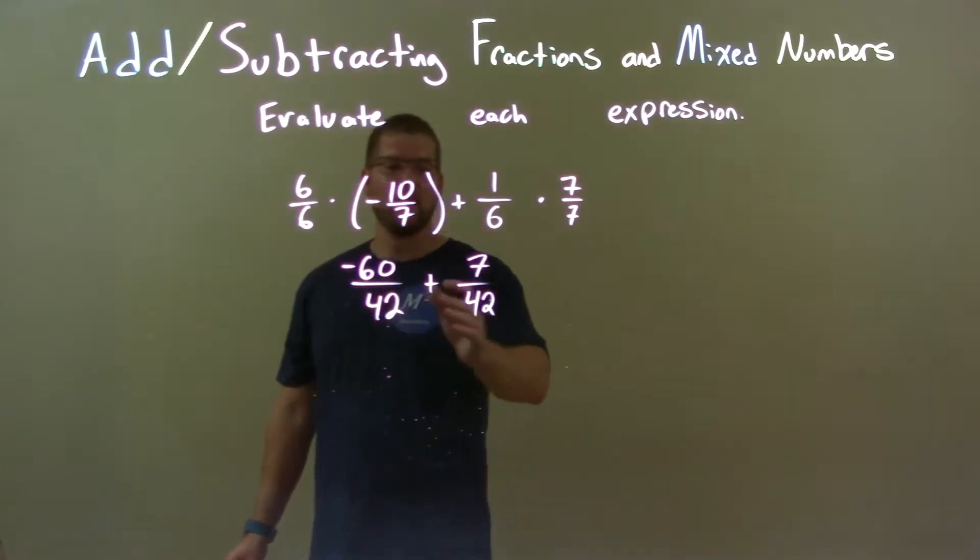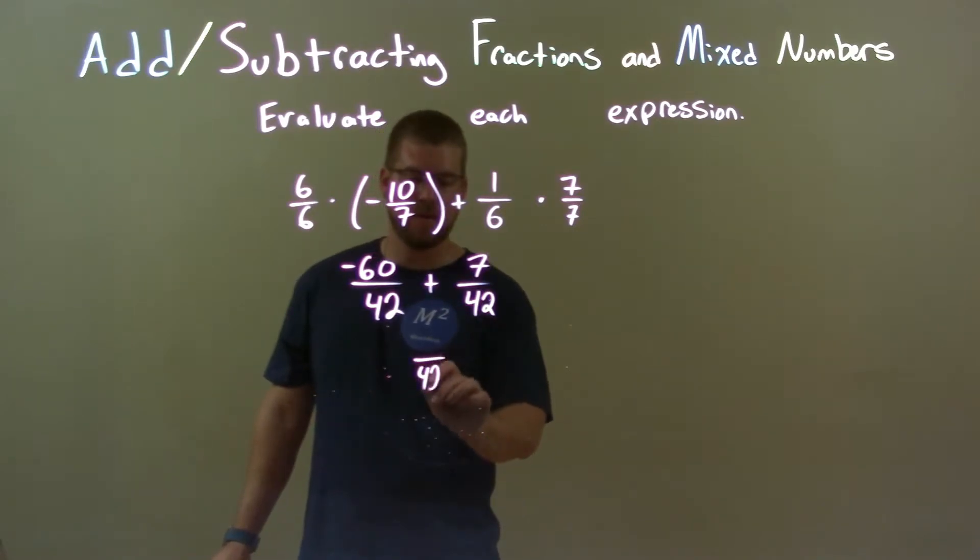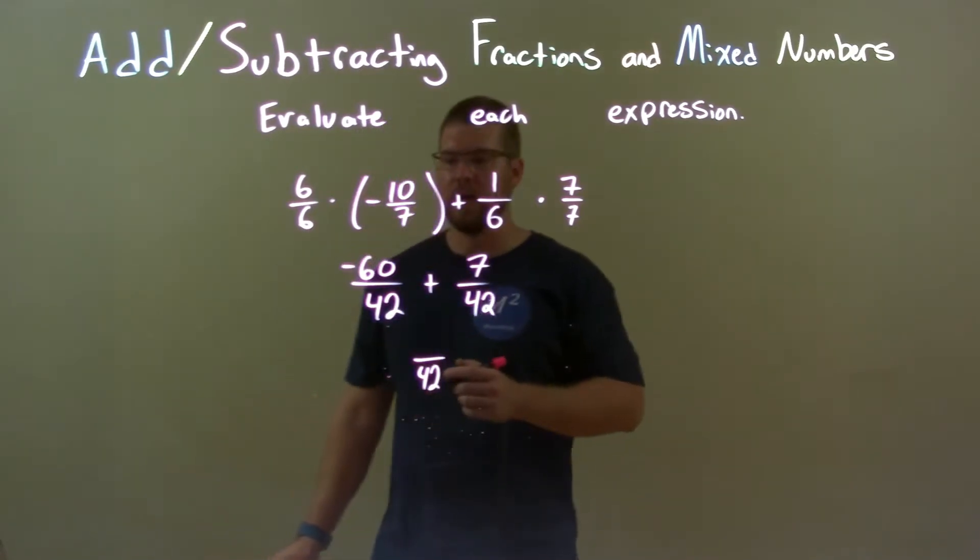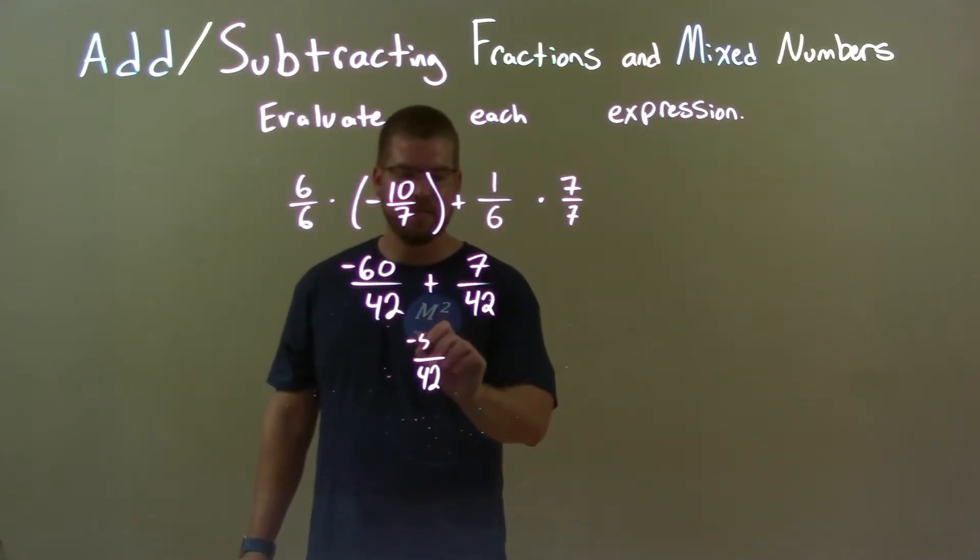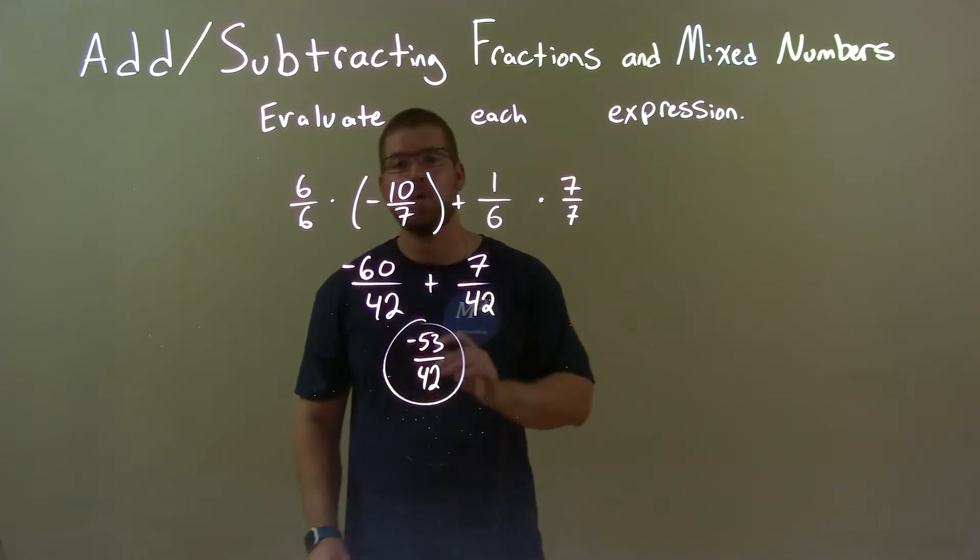So now that we have the same base, we can combine these two numbers and keep the base the same. Always 42. And look at the numerator flow. Negative 60 plus 7 is just negative 53, and so our final answer here is just negative 53 over 42.